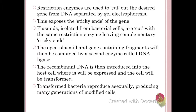The plasmids isolated from the bacterial cells are cut with the same restriction enzyme, leaving complementary sticky ends. So now this gene and this plasmid are able to combine. The open plasmid and gene-containing fragments will then be combined by a second enzyme called DNA ligase. The recombinant DNA is then introduced into the host cell, where it will be expressed, and the cell will be transformed through the production of whatever protein that gene codes for.